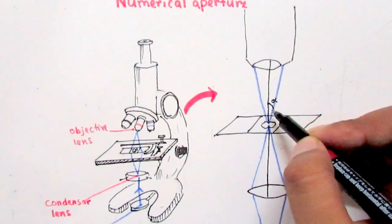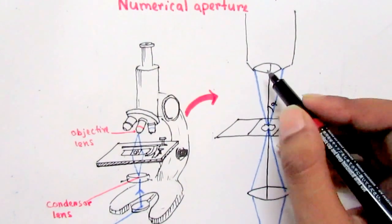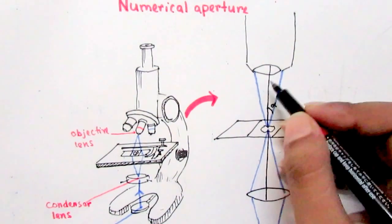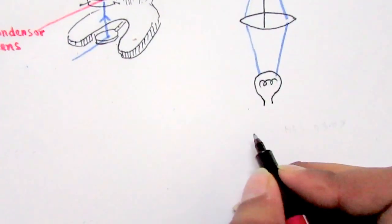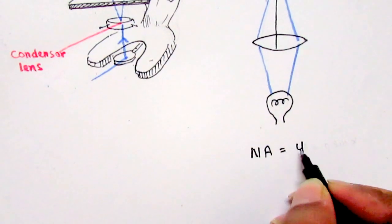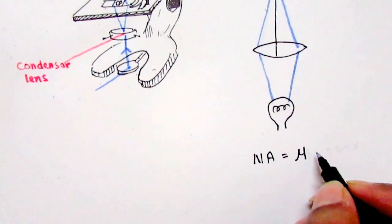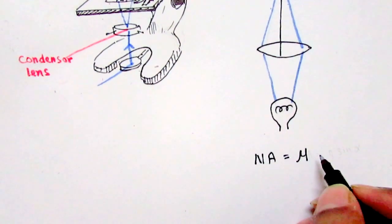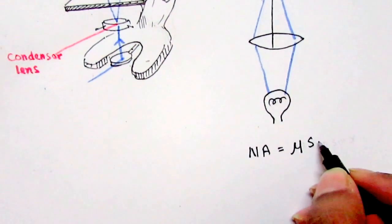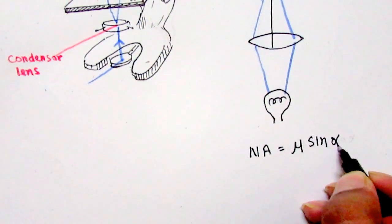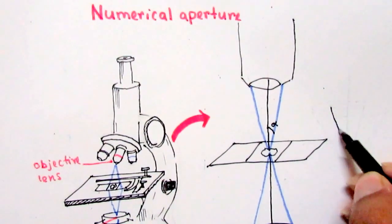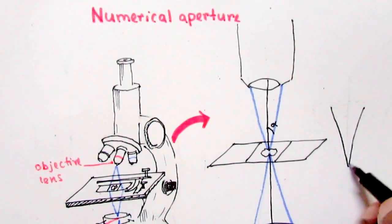Numerical aperture is dependent upon two things: one is this half angle with the optical axis, and also the refractive index of the media surrounding the slide. The equation for numerical aperture is: NA = μ · sin(α), where μ is the refractive index of the media — for air it is one, and if we use oil immersion lens it is greater than one — and α is the half angle with the optical axis.